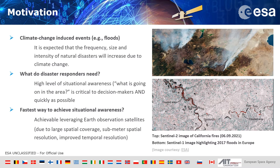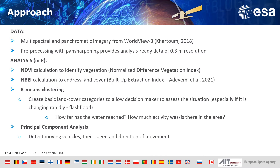Here on the right hand side you have two examples of imagery over fires and flooding areas. We are using WorldView-3 multispectral and panchromatic images with pre-processing pan-sharpening steps. For the analysis, we use R to calculate indices — NDVI and NBDI — to identify vegetation cover and land cover using k-means clustering. We also use principal component analysis to detect moving vehicles, their speed and directional movement, combining all this information to create situational awareness.